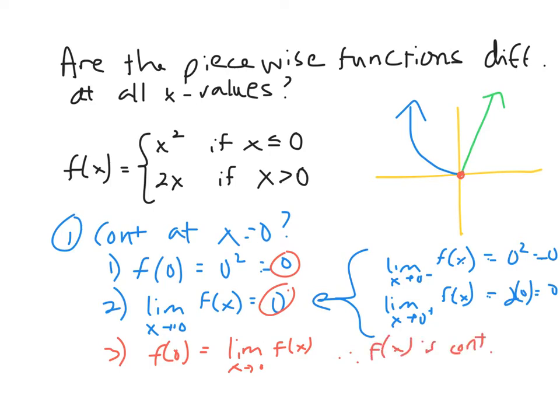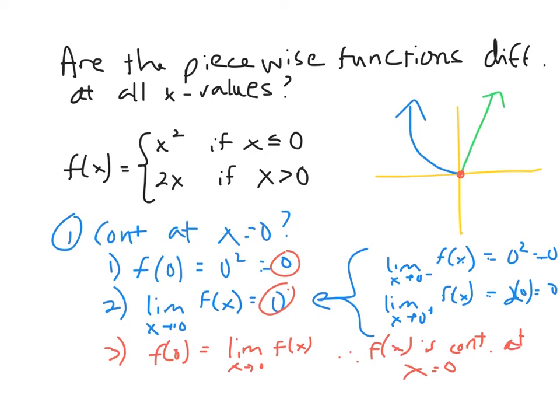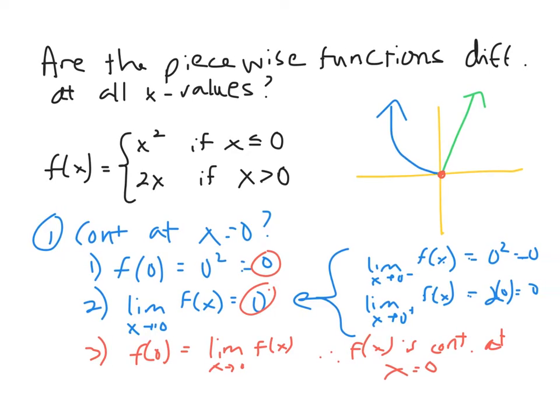Therefore, f(x) is continuous at x equals zero. This is consistent with what the graph showed. If you can't picture it or need to show it formally, you now have a method. That completes part one.